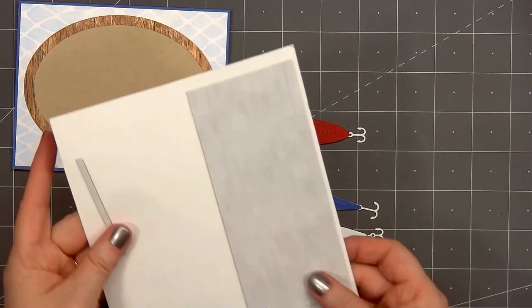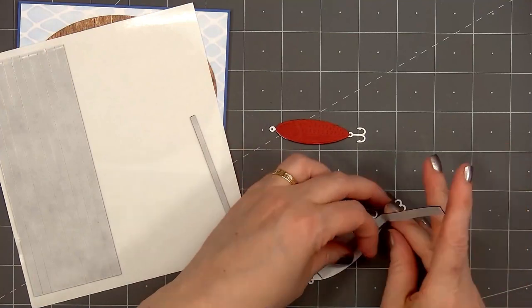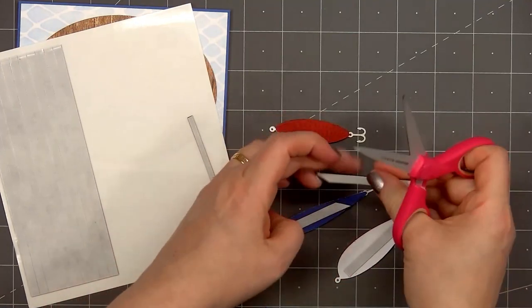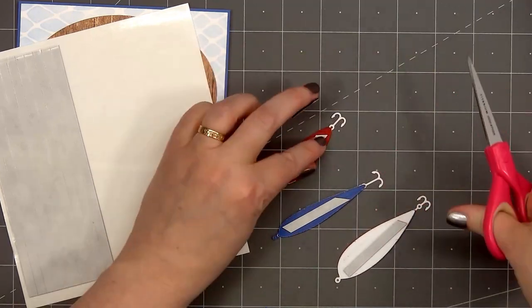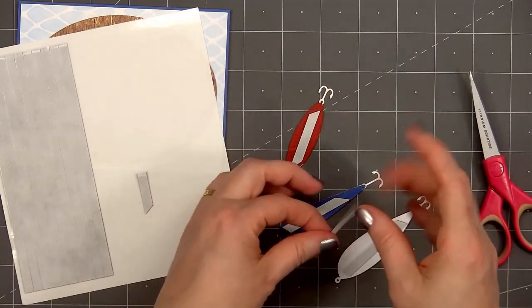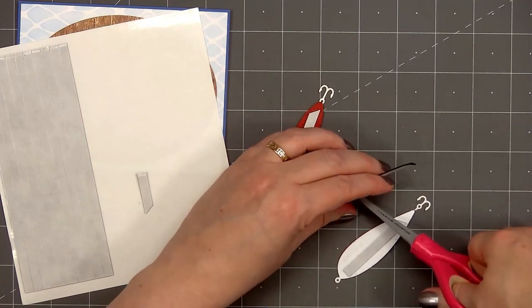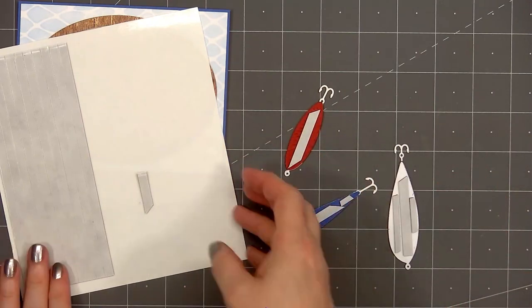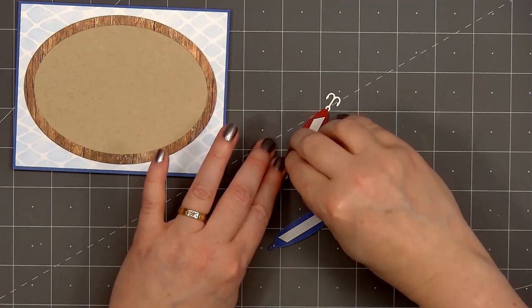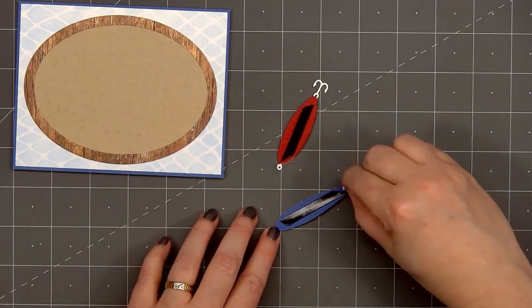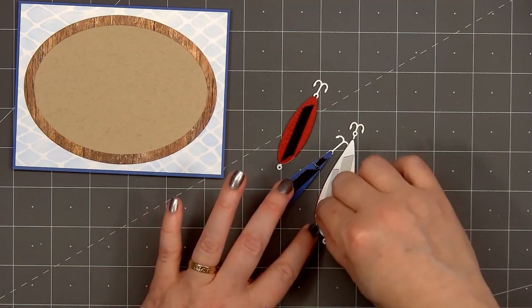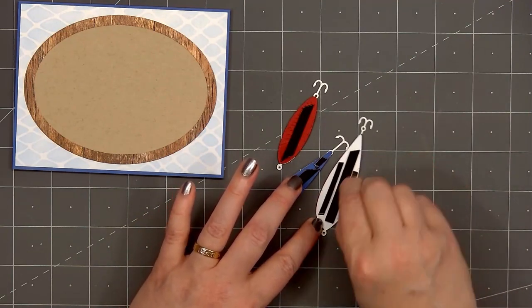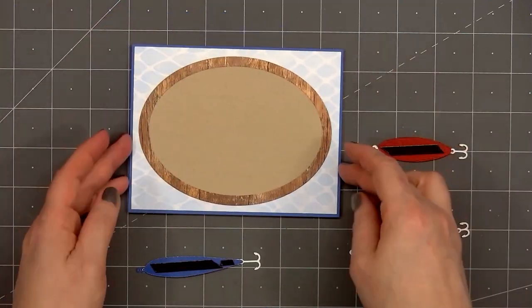Once I have all three of the lures assembled, I'll flip them over and add some thin foam dimension on the back side. I'm using the black foam strips from Honey Bee Stamps. I'll cut some smaller pieces to fill in some of the areas. Then I'll remove the release paper and add all three of the lures onto the oval. I'm putting the largest fish lure in the center, the smaller one on top, and the long skinny one on the bottom.